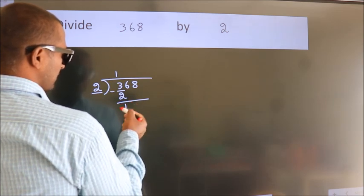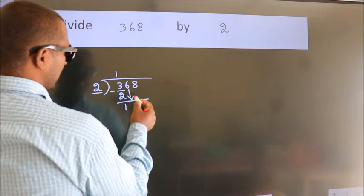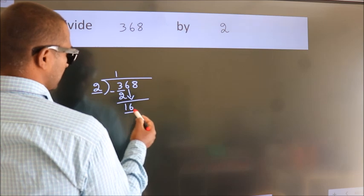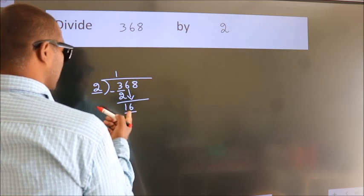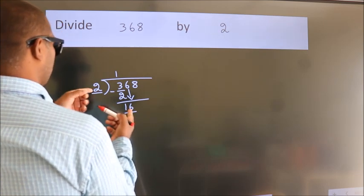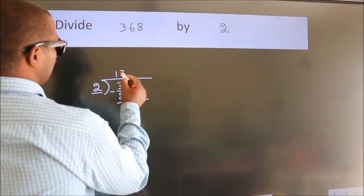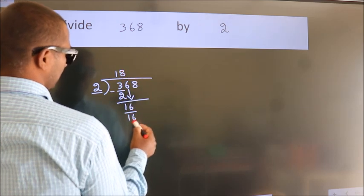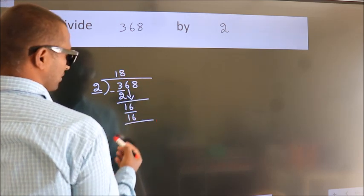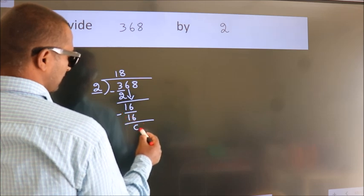After this, bring down the beside number. So 6 down. So 16. When do we get 16? In the 2 table, 2 8s 16. Now we subtract. We get 0.